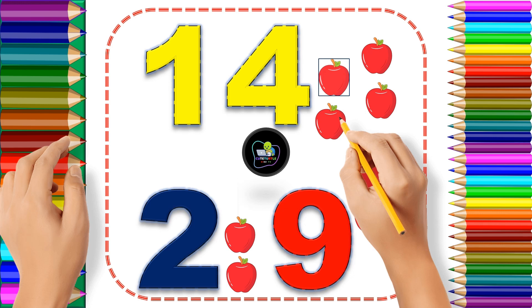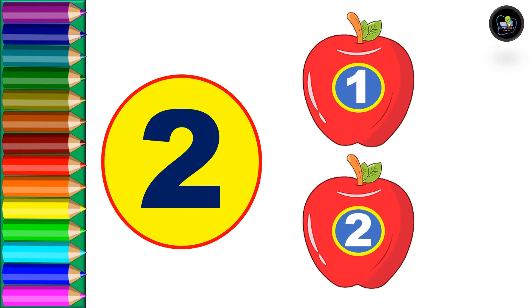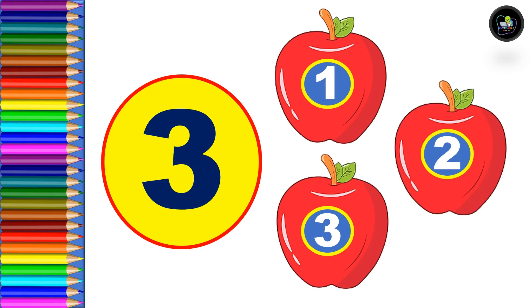Welcome back to our channel, Cute Turtle Kids TV. Today we learn one to twenty numbers with the help of apples, so let's start. One: one apple. Next, two: one apple, two apples, total two apples. Three: one, two, three, total three apples.